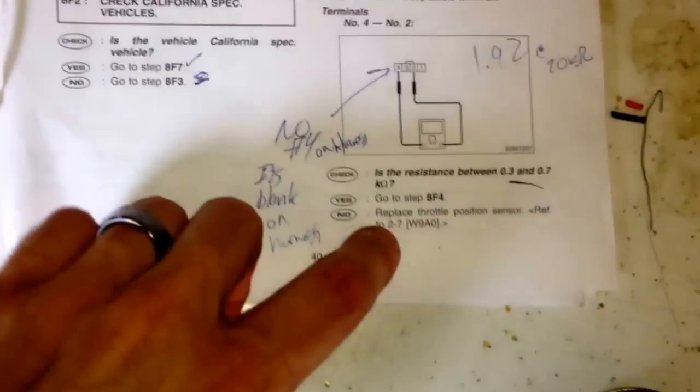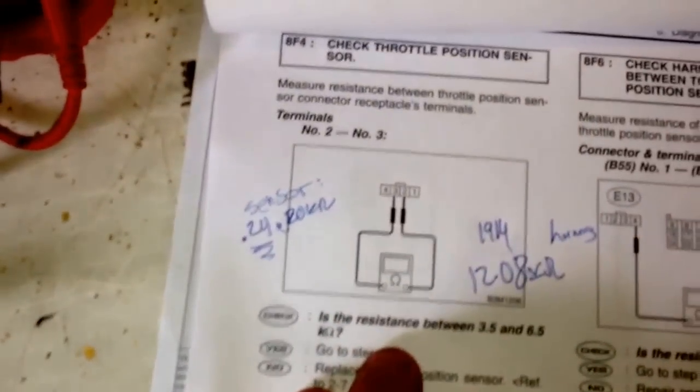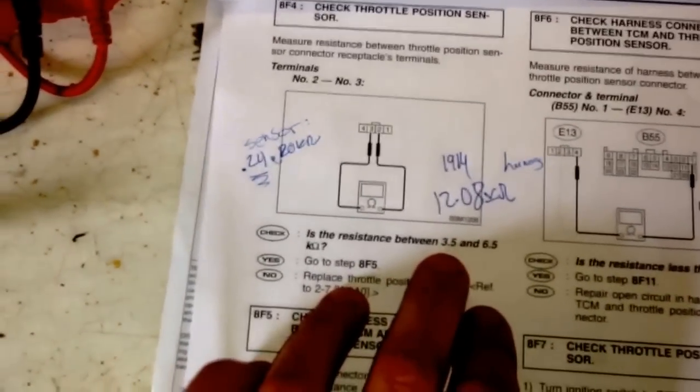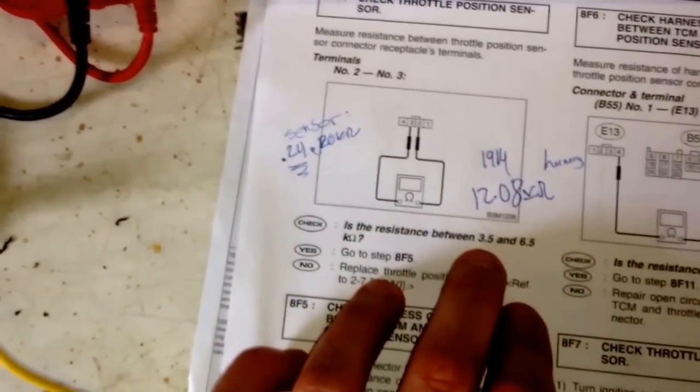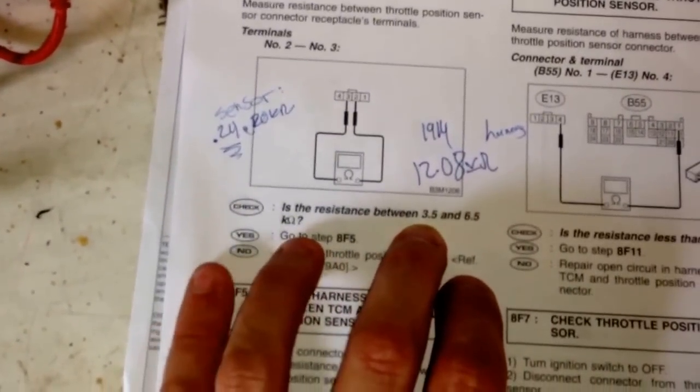So it is way above what it's supposed to be. If it is, then it says replace the position sensor. I was pretty sure but then I just went to the other one, which in this position the resistance is very high, meaning it should be open rather than closed, and it was at 3.5 to 6.5 kilo ohms between two and three, and mine is 0.24.